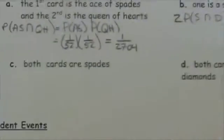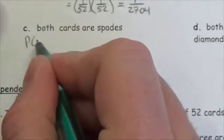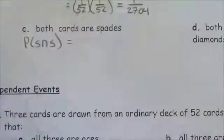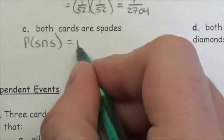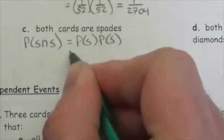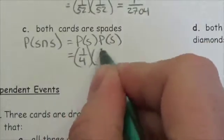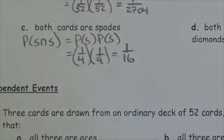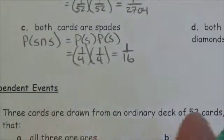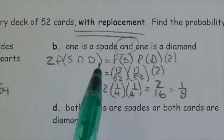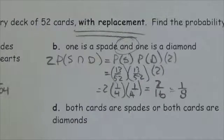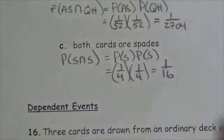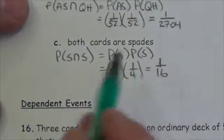Now, what's the probability that both cards are spades? In this case, I don't have to worry about order — it's the same event regardless. So I write this as the probability of getting a spade times the probability of getting a spade: 1/4 times 1/4, which is 1/16. When you switch the order here, there's no difference — nothing unique changes — so there's no need to multiply by 2.